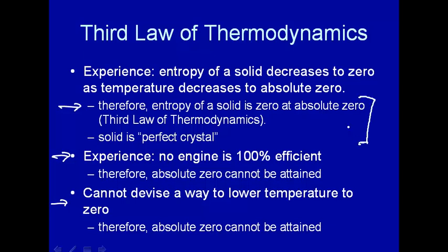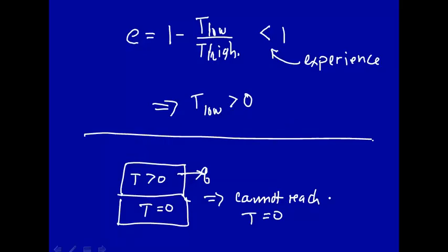The one we use now is that the entropy of a solid is zero at absolute zero. So what does that mean? This implies that there is an absolute scale of entropy.